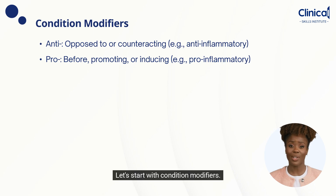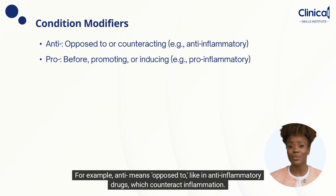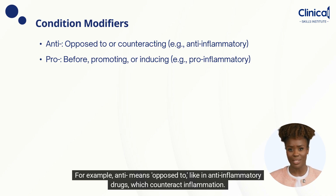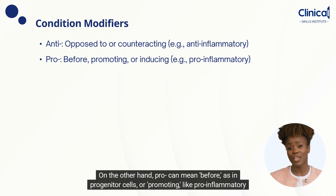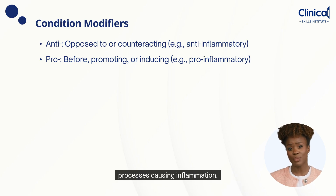Let's start with condition modifiers. For example, anti- means opposed to, like in anti-inflammatory drugs, which counteract inflammation. On the other hand, pro- can mean before, as in progenitor cells, or promoting, like pro-inflammatory processes causing inflammation.